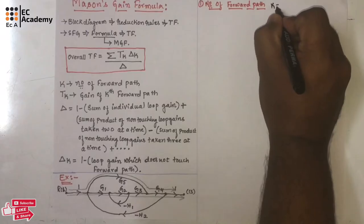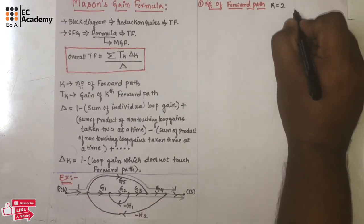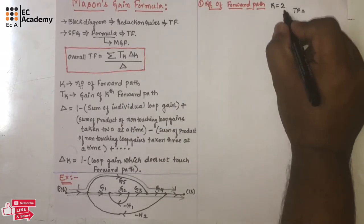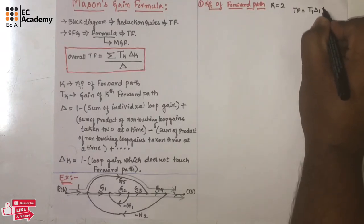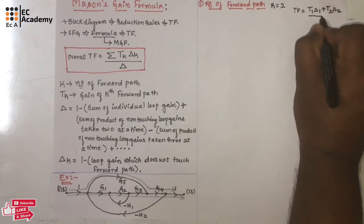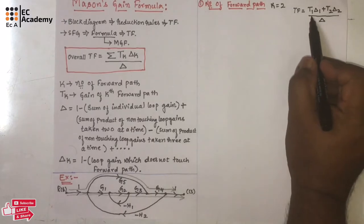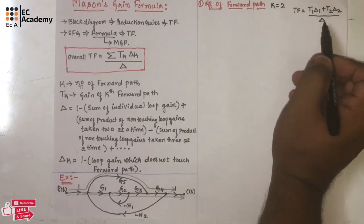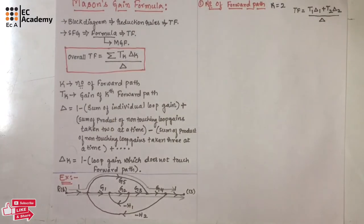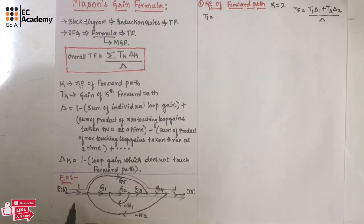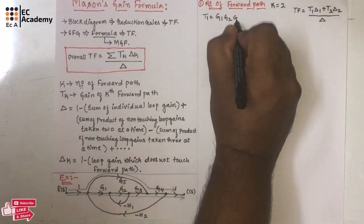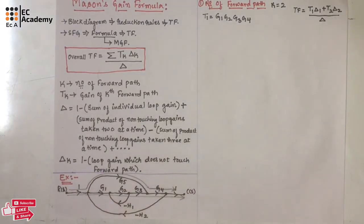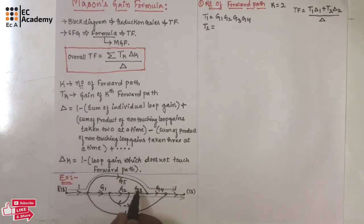The number of forward paths k is 2. So Mason's Gain Formula reduces to T1*delta1 plus T2*delta2, all divided by delta. T1 is the gain of the first forward path: 1 * g1 * g2 * g3 * g4, which is g1*g2*g3*g4. The second forward path gain T2 is 1 * g5 * g4, so T2 = g5*g4.